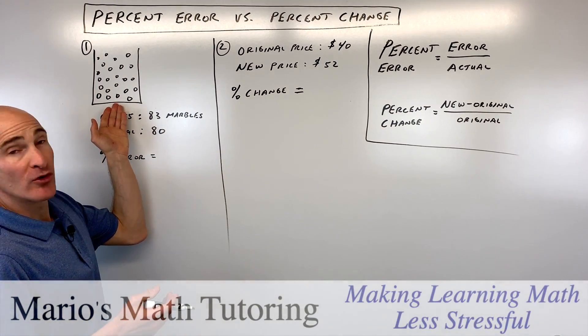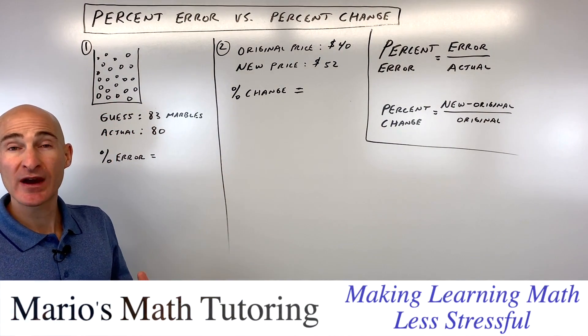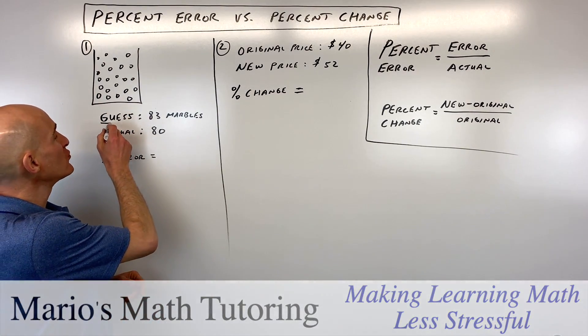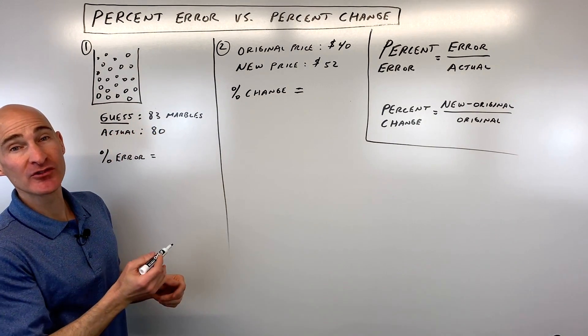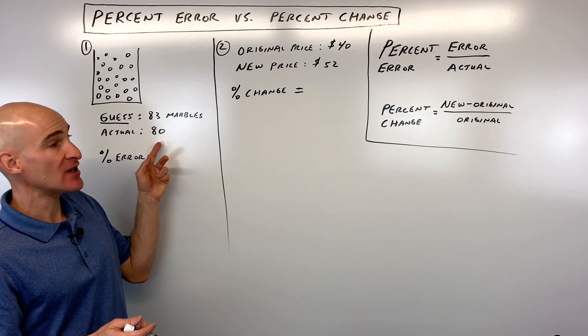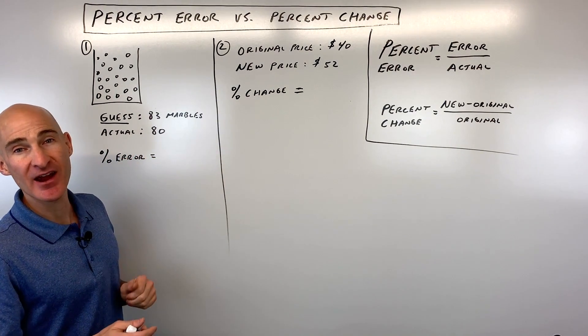So you're given this jar of marbles, and this is one of those games where you have to try to guess how many marbles are in the jar. And say, for example, you guess that there's 83 marbles, but in actuality, there's only 80 marbles, and you want to calculate your percent error.